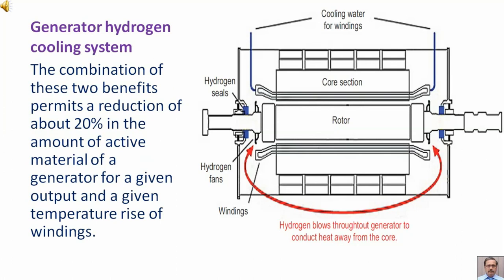The combination of these two benefits permits a reduction of about 20% in the amount of active material of a generator for a given output and a given temperature rise of windings.